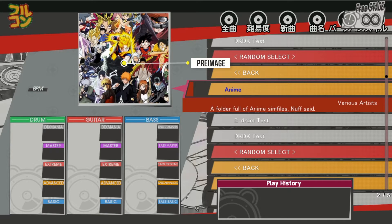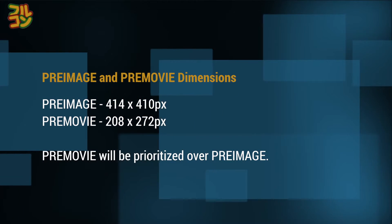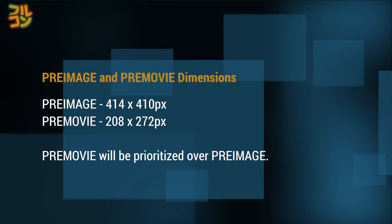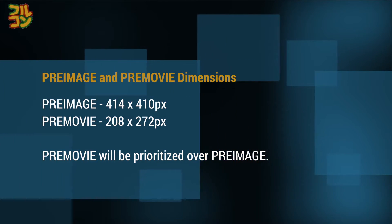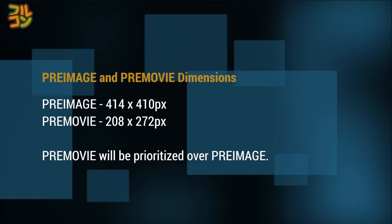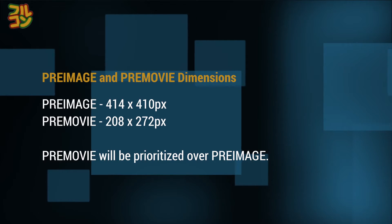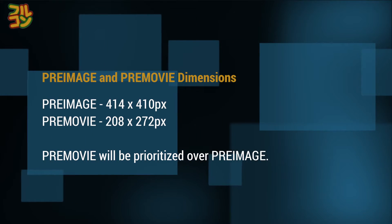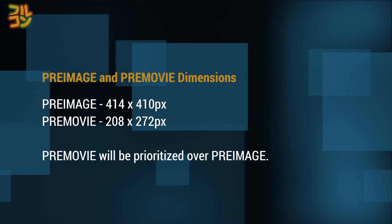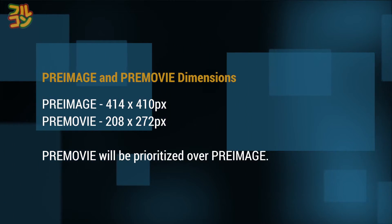'Pre-image' is the picture the folder will show, and optionally 'pre-movie' is the movie that will play when you select this folder. For pre-image, the dimension I use is 414 by 410 pixels, which is the usual size for sim file banners. For pre-movie, the dimensions I use are 208 by 272 pixels — anything higher will be cropped. Also, if you use pre-movie, pre-image will be useless. Both files should be inside the folder alongside the box.def file.